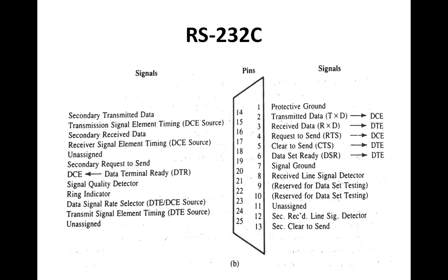Pin number eight is the Received Line Signal Detector, commonly referred to as Data Carrier Detect (DCD) or carrier detect. This signal is used by the modem to signal the transmitter that the link is usable; it becomes active when the transmitter's Request to Send is granted.